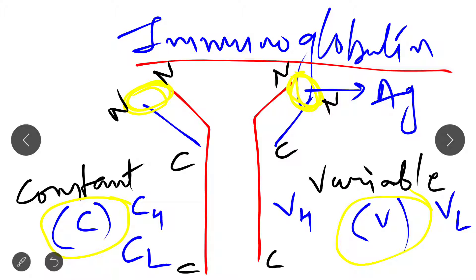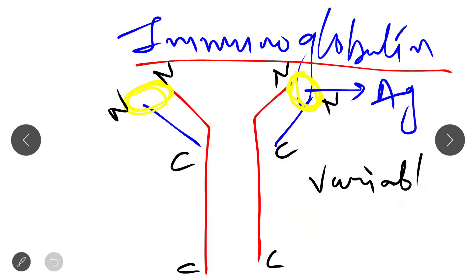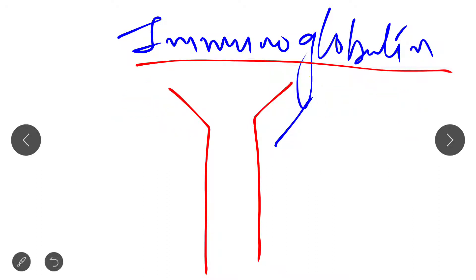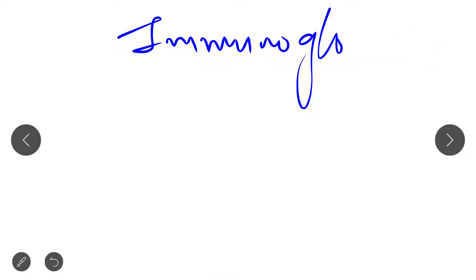I think now you have a clear idea about the variable and constant regions of both heavy chain and light chain. Now I will make it clear where this variable region and constant region are present by drawing a fresh diagram of immunoglobulin.